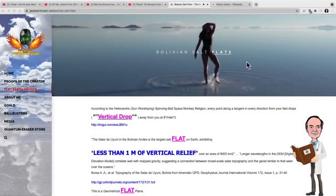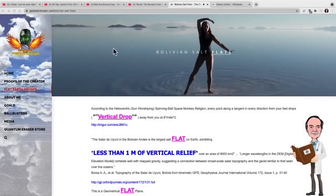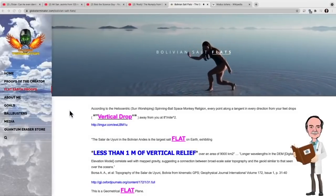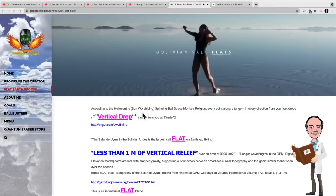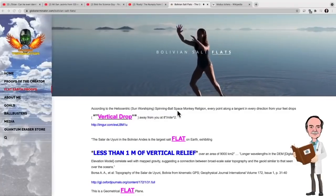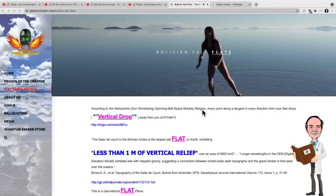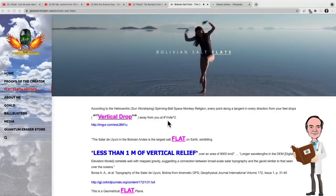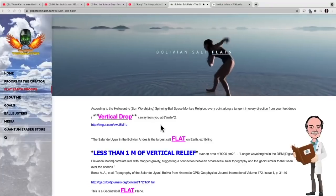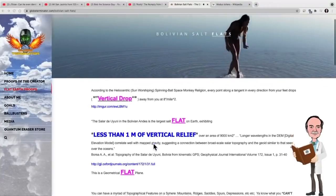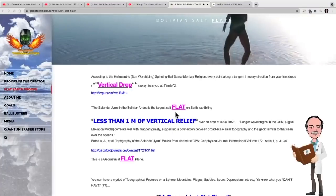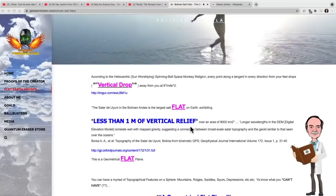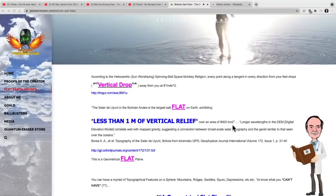Okay so let's have a look here at the Bolivian salt flats. We've got a nice lady dancing in a puddle on this salt flat. Now according to Quantum Eraser, according to the heliocentric, sun-worshipping, spinning ball, space monkey religion, every point along a tangent in every direction from your feet drops away from you at 8 inches per mile squared. These Bolivian salt flats are exhibiting less than one meter of vertical relief over an area of 9,000 square kilometers.